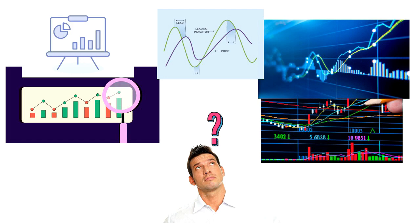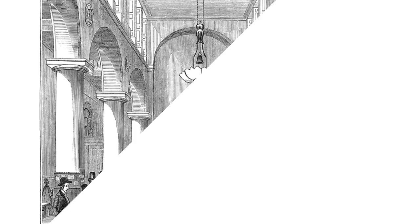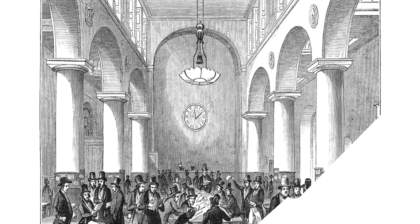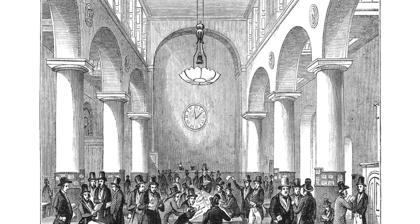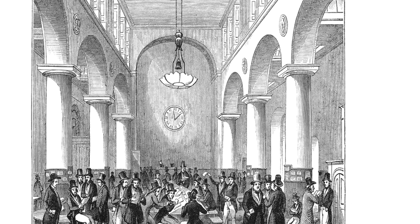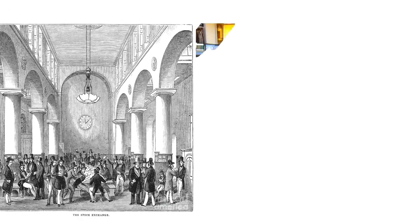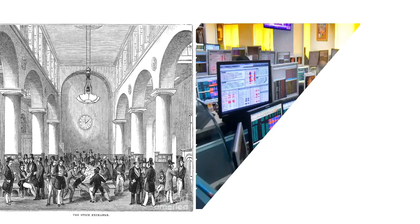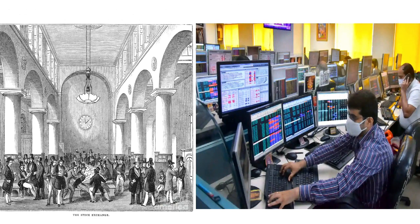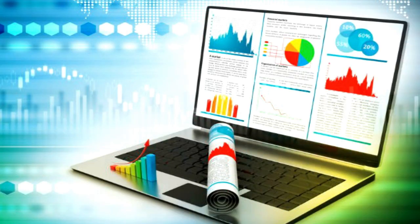Let's start with the basics. On the 18th century in Asia, technical indicators were identified. In that period, price was calculated on paper. Now we are in the 21st century and we have a lot of software available. Let's see how technical indicators form.